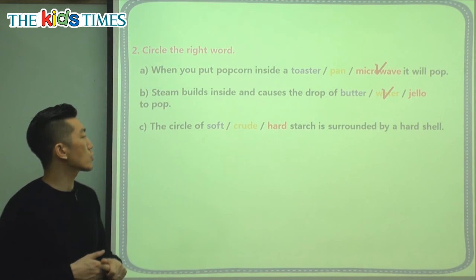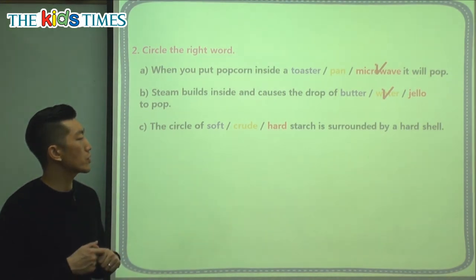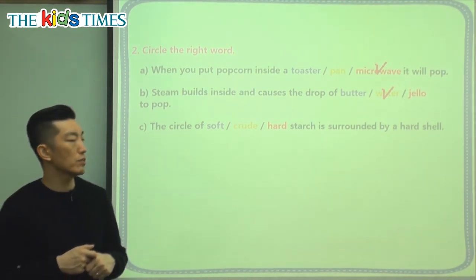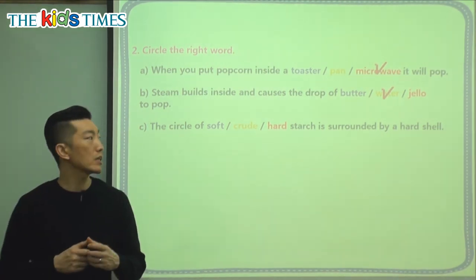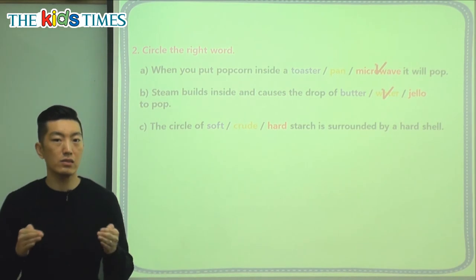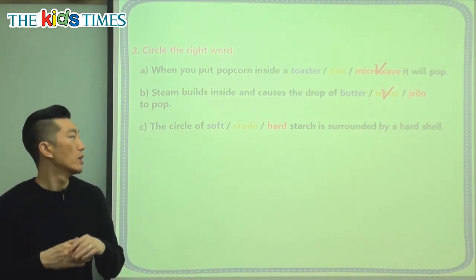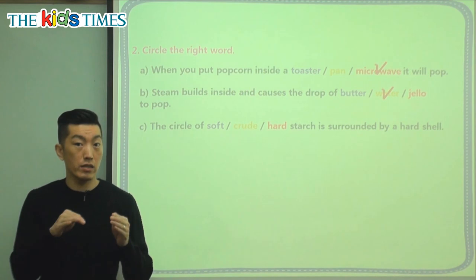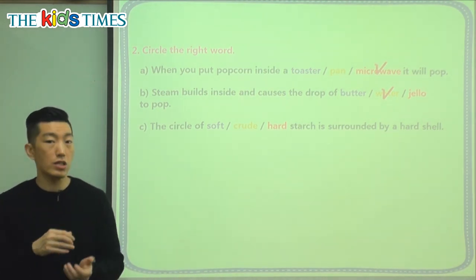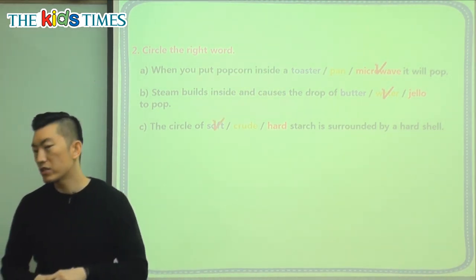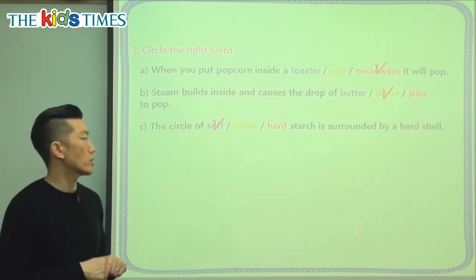It says: the circle of soft starch, crude starch, or hard starch is surrounded by a hard shell. Crude means very thick, and hard starch — well, that's only the outer shell that's hard. Under the outer shell, there's a layer of starch and a tiny drop of water. What kind of starch layer is it? It's a soft layer of starch.